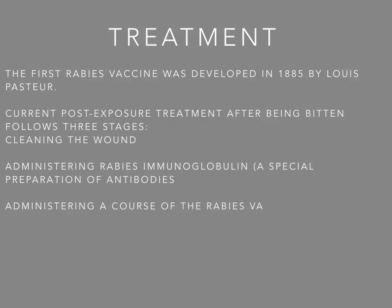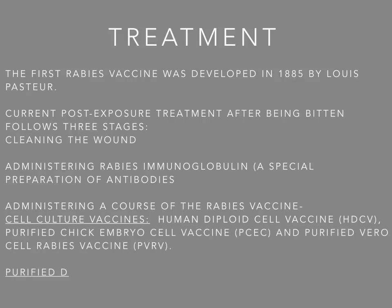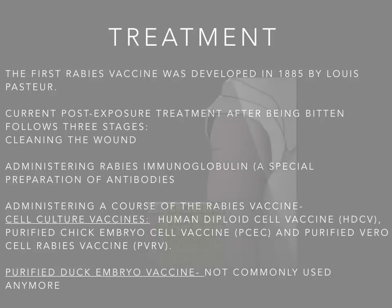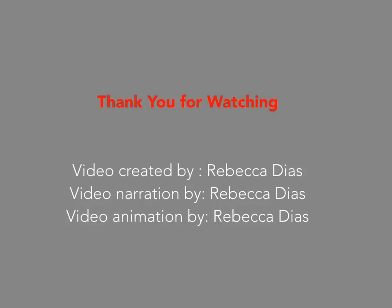Third, administering a course of the rabies vaccine multiple times, usually 5 dosages. There are cell culture vaccines, human diploid cell vaccines, purified chick embryo vaccines (most common), and purified Vero cell rabies vaccine. Purified duck embryo vaccines are no longer commonly used. If you have never been exposed to rabies, you will receive 5 dosages of the vaccine on day 0, 3, 7, 14, and 28.